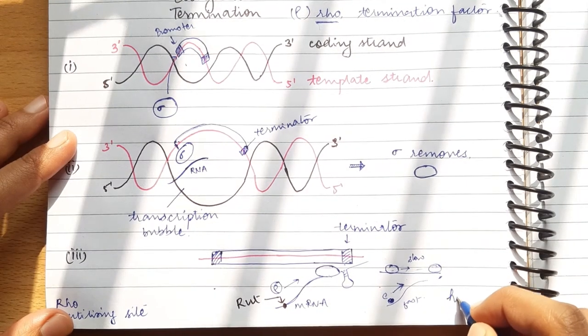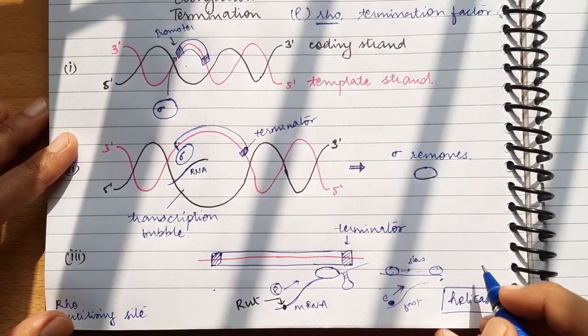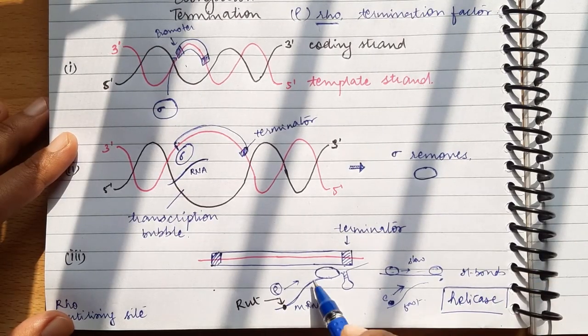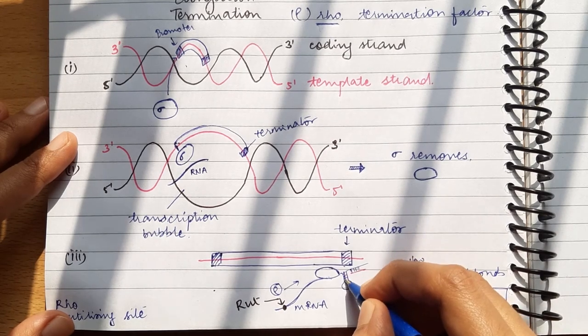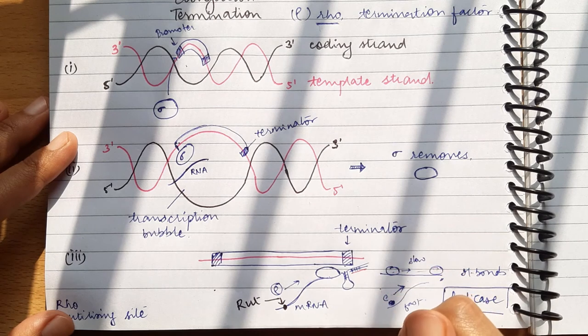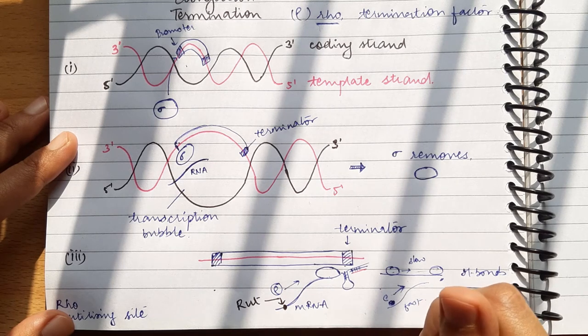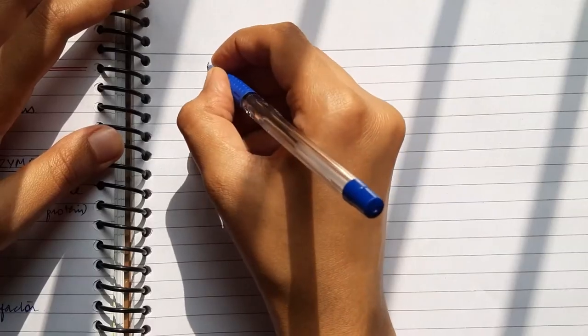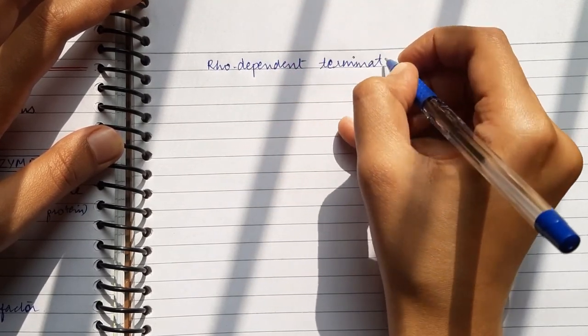So now rho factor moves forward and catches up with RNA pol enzyme and binds to it. This rho factor has helicase-like activity, meaning it breaks hydrogen bonds. Now ahead there will be some bonds with the template strand. Rho factor breaks these bonds after binding to RNA pol enzyme and mRNA gets released from RNA pol enzyme.